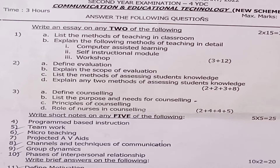Question 2b: explain the scope of evaluation. Question 2c: list the methods of assessing students' knowledge. Question 2d: explain any two methods of assessing students' knowledge. Question 3a: define counseling — 2 marks. Question 3b: list the purpose and needs for counseling — 4 marks. Question 3c: principles of counseling — 4 marks. Question 3d: role of nurse in counseling — 5 marks.